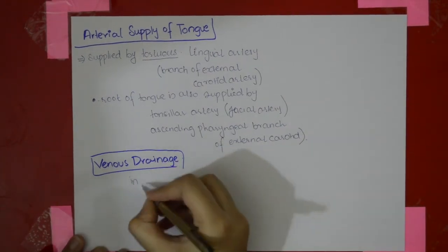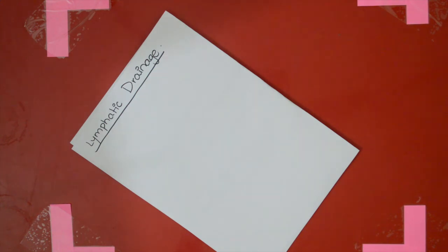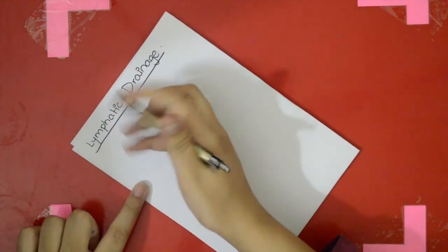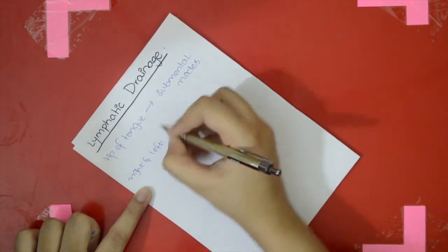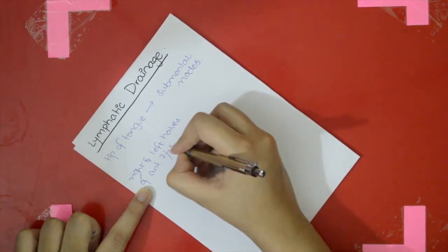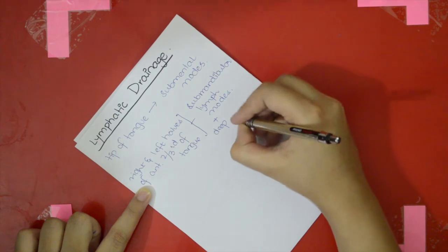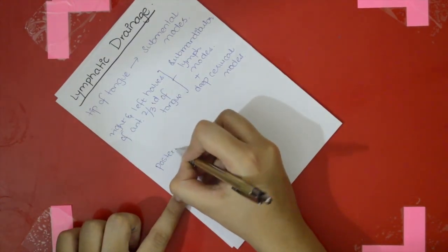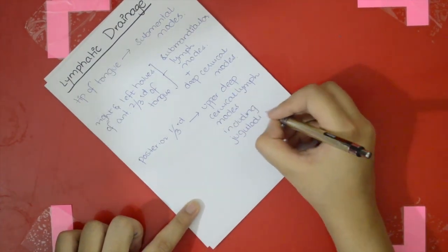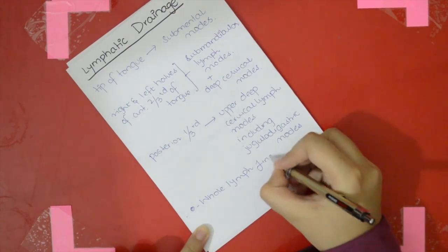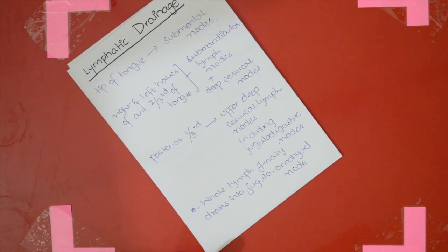The venous drainage is into the internal jugular vein. The lymphatic drainage is very important when it comes to the tongue. The tip of the tongue drains into the submental lymph nodes. The right and left halves of the anterior two-thirds of the tongue drain into the submandibular lymph nodes, and a few also drain into the deep cervical nodes. The posterior one-third drains into the upper deep cervical lymph nodes, including the jugulodigastric nodes. The whole lymph finally drains into the jugulo-omohyoid nodes, also called the nodes of the tongue.